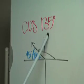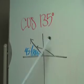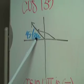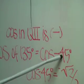We subtract 135 from 180 to get the reference angle of 45 degrees. Since cosine in quadrant 2 is negative when we look at the unit circle, we keep the sign and apply it to the reference angle.